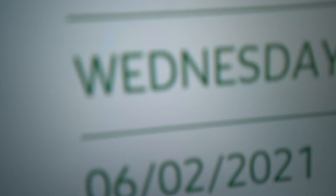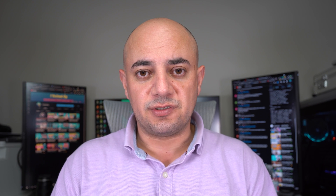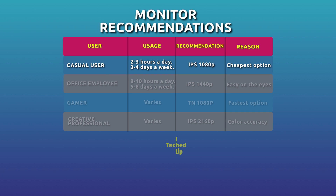Now that you have a better understanding of computer monitors, let me make it even easier for you. If you fall into the category of casual user — like a student doing homework or research for a couple of hours a day, three or four days a week — I recommend a 1080p monitor. It's the most common type, one of the cheapest, and will serve you well if you're on a budget and don't need exceptional image quality.